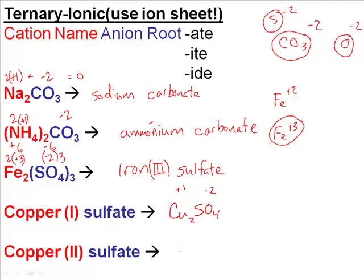What if we had copper(II) sulfate? Plus two and minus two — the formula is just CuSO4. If it doesn't need subscripts, that's copper(II) sulfate. The most common form of copper sulfate is this one, and this is the one we saw in our copper lab. This is also why copper has so many different colors — copper(I) sulfate and copper(II) sulfate are different compounds; one has more copper per sulfate, which is one of the reasons they have different chemical properties and colors.